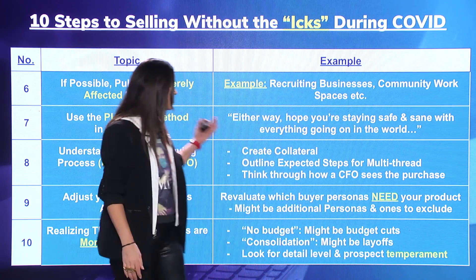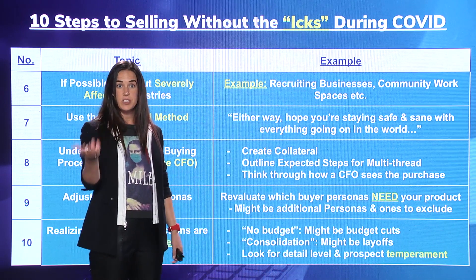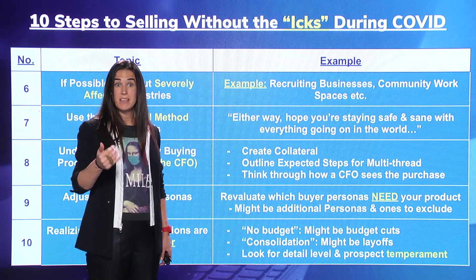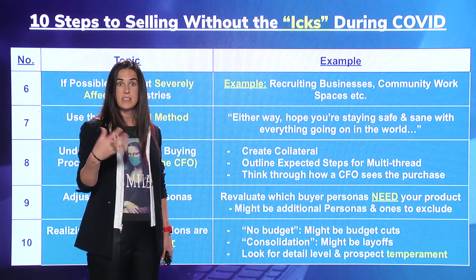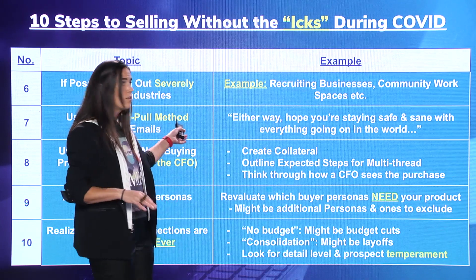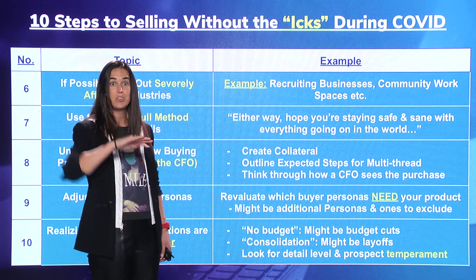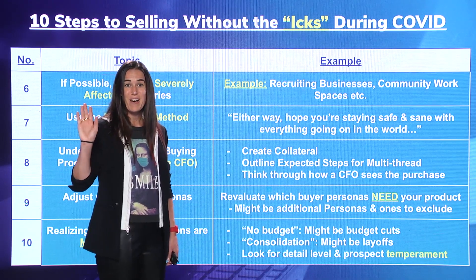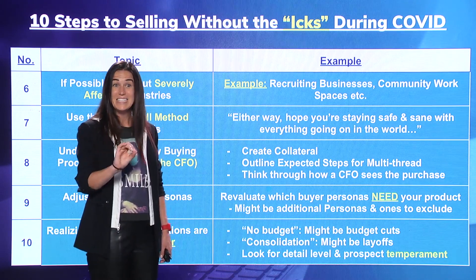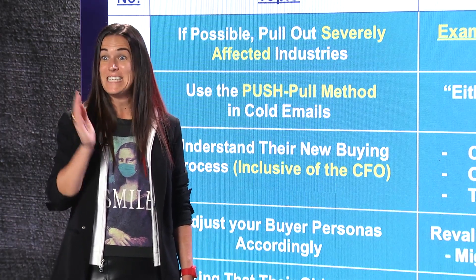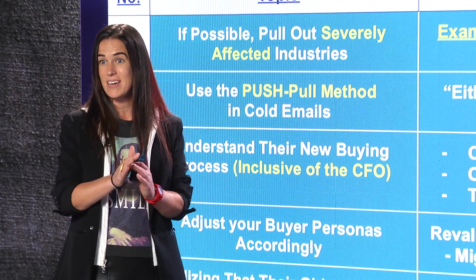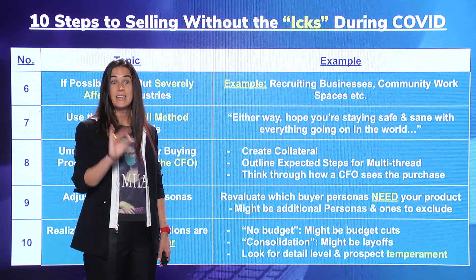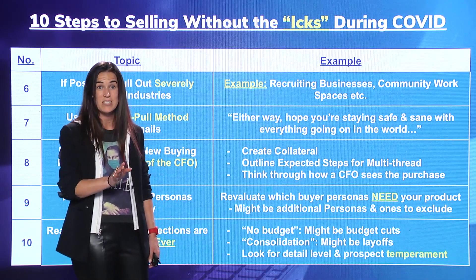Understand not only that your buyer is in a completely different world, but that their buying process has shifted — they're under more scrutiny and having to include others more than ever before. I would create collateral that speaks to the CFO in terms of your company, to get ahead of it for your buyer. Enable your buyer so that if they want to purchase your software, you're their advocate. If you study the DISC profile, CFOs are typically high C — meaning they really like details and justifiable, logical data to make a decision. If you don't give them that data, they'll dig their heels in and not trust you.